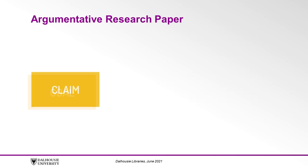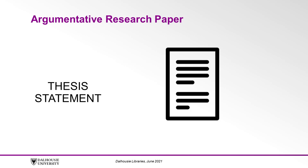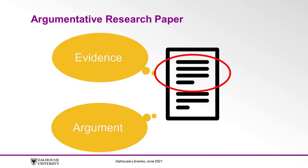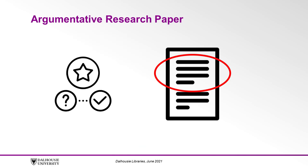The claim you want to establish is called the thesis statement. The thesis statement usually appears very early in the paper, most often in the first paragraph, and provides the context for the evidence and argument you will provide in the rest of the paper. In other words, the thesis tells your reader the specific goal for the paper and why it matters.